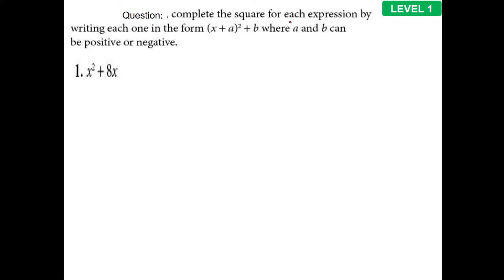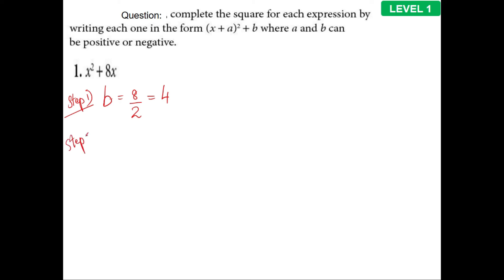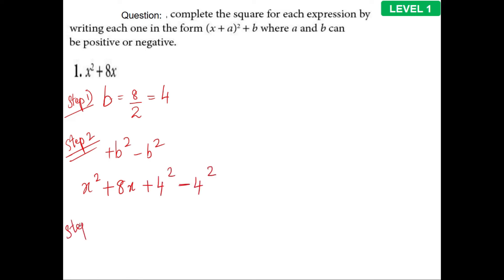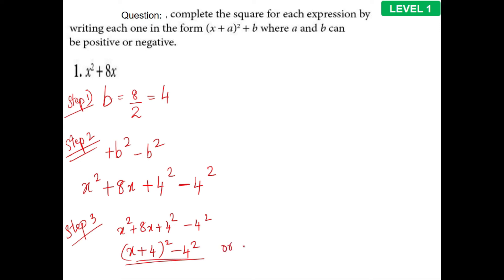Level 1 questions are pretty straightforward. For x squared plus 8x: the coefficient of x squared is 1, so b equals 8 divided by 2, which is 4. Step 2: add and subtract b squared — giving x squared plus 8x plus 4 squared minus 4 squared. Grouping: x squared plus 8x plus 4 squared becomes x plus 4, the whole square, minus 4 squared, which equals x plus 4, the whole square, minus 16.